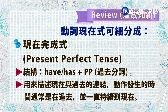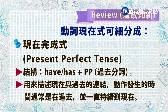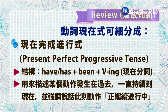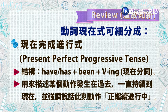可用现在进行式来代替未来式。第五，现在完成式结构为 have 或 has 加过去分词，用来描述现在与过去的连结，动作发生的时间通常是在过去并一直持续到现在。第六，现在完成进行式的结构为 have 或 has 加 been 加 V-ing（现在分词），是用来描述某个动作发生在过去、一直持续到现在，并强调说话此刻动作正继续进行中。